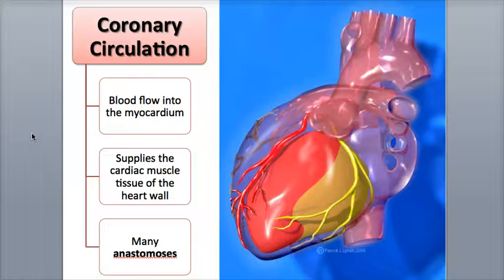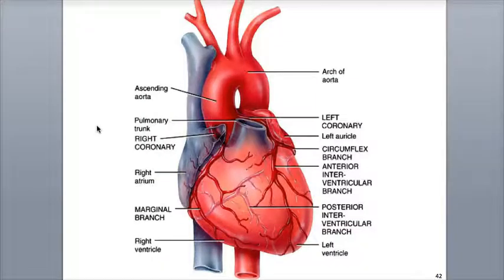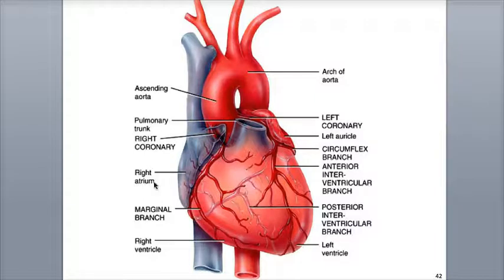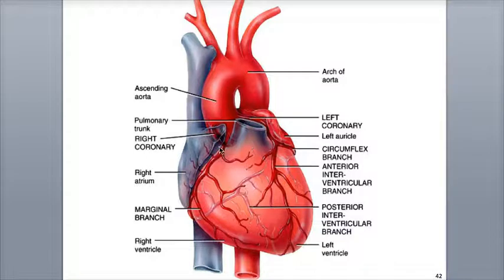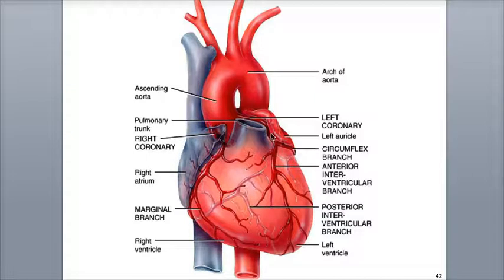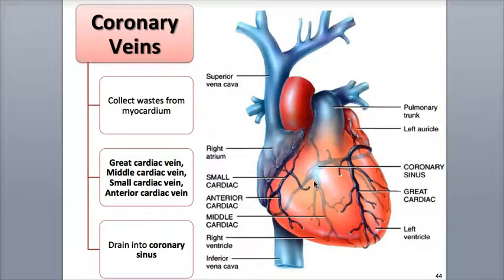The coronary circulation is a branch of the systemic circulation. The name coronary means crown, a reference to how the coronary arteries, which branch off the ascending aorta, wrap around the top of the heart like a crown sitting on a person's head. Oxygenated blood flows into the right and left coronary arteries when the heart relaxes; the openings into the coronary arteries are squeezed closed during the heart's contraction. The blood in the aorta is under very high pressure, and it is this high pressure that carries blood into the coronary circulation — beginning with the coronary arteries, then the capillaries, and finally the coronary veins.